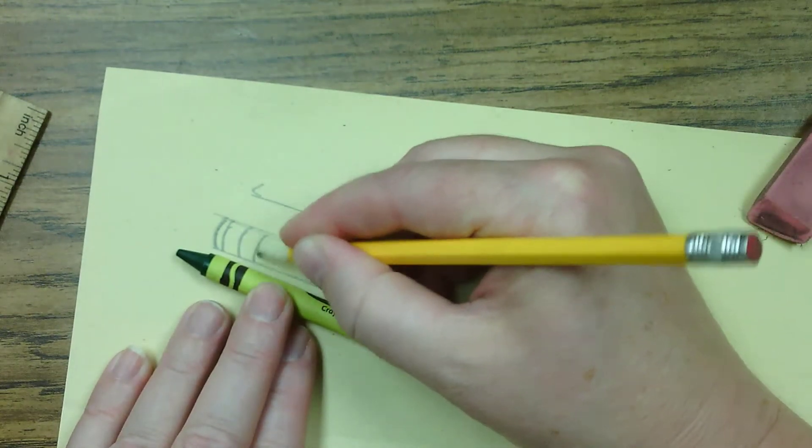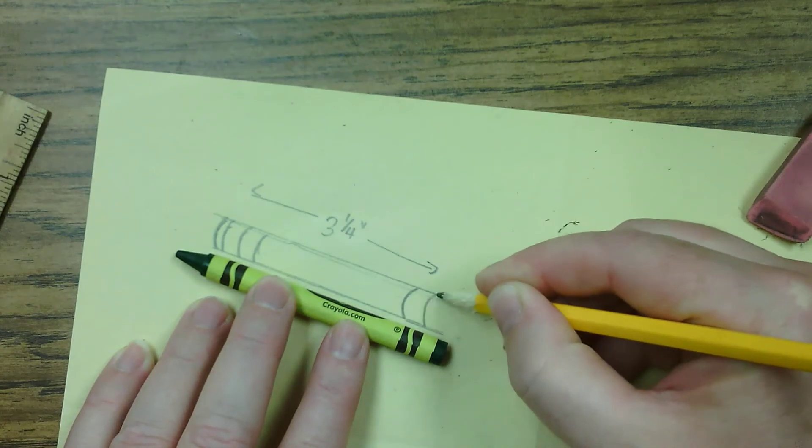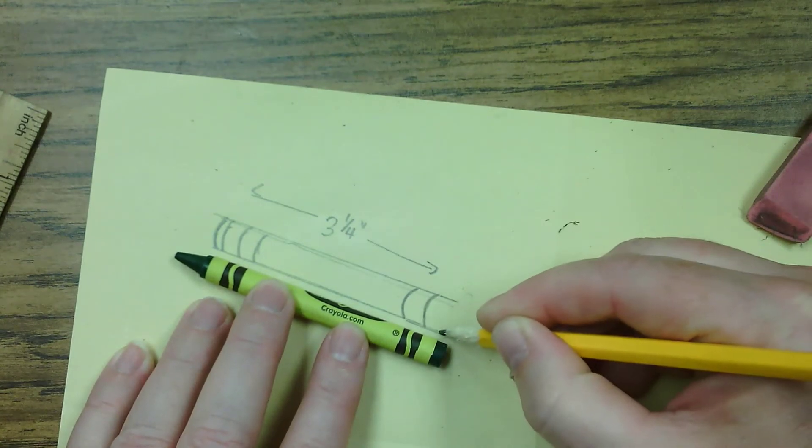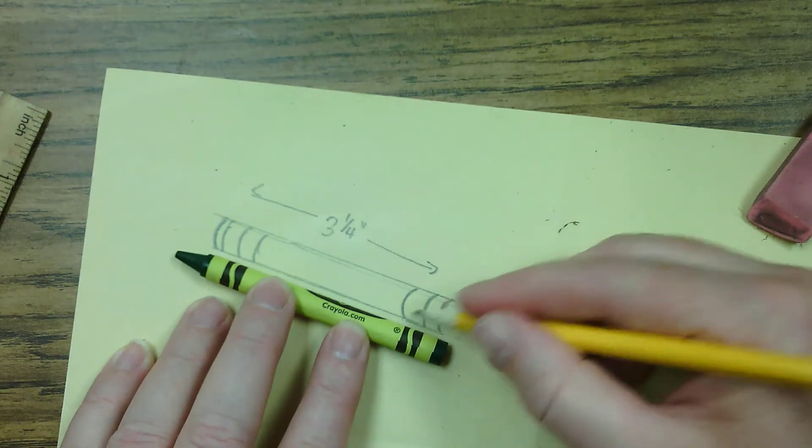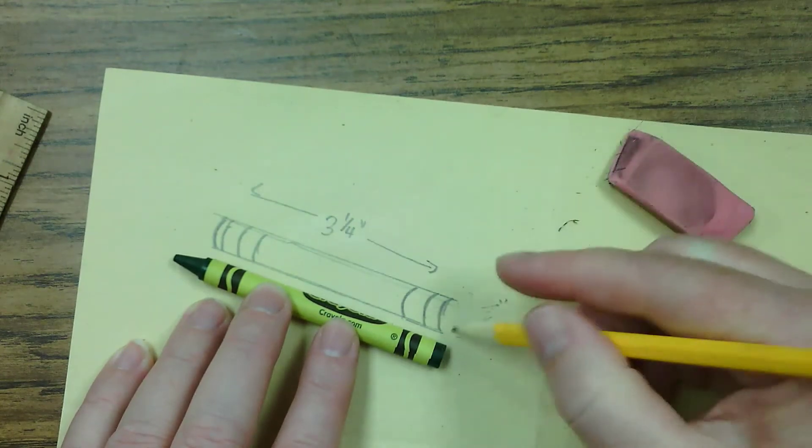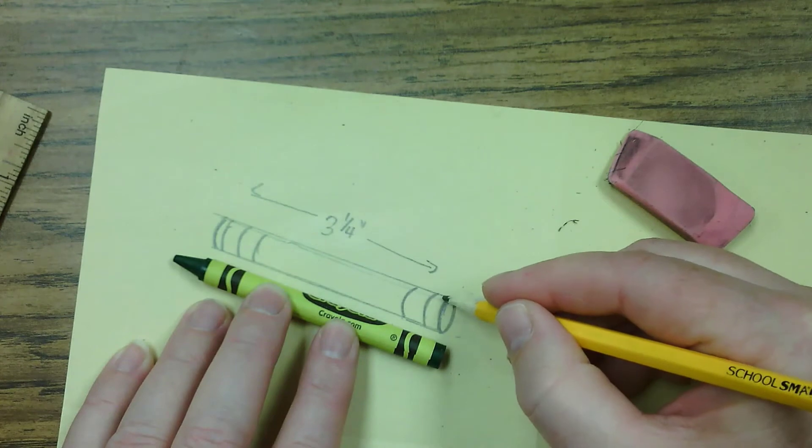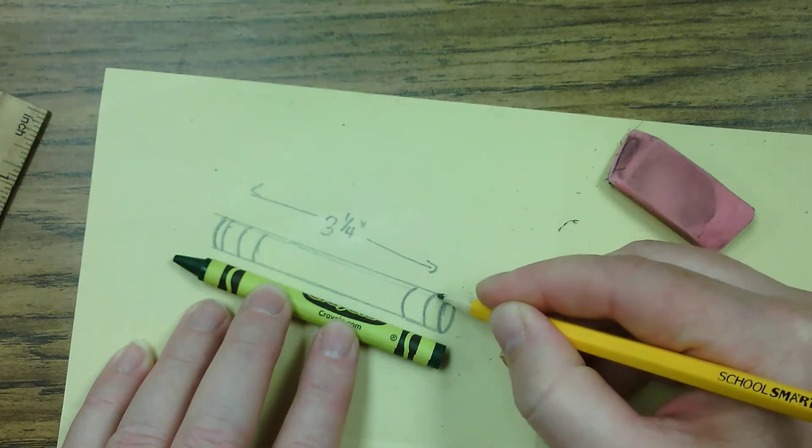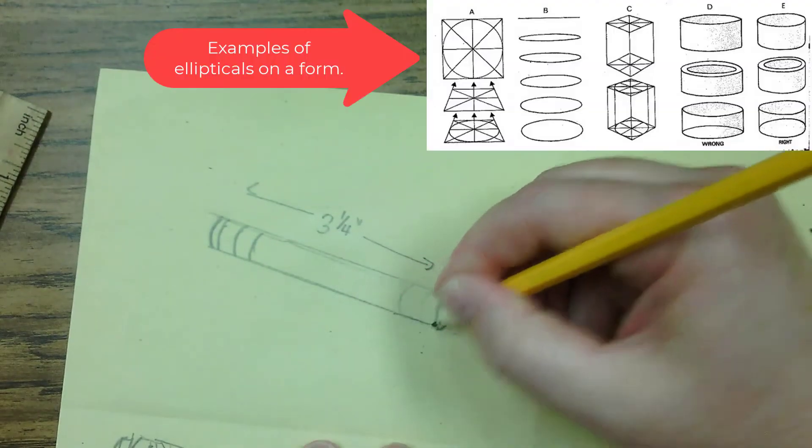Now I'm placing the crayon next to my drawing so I know where the designs are supposed to be placed. Each line that's straight, that appears straight, will be drawn curved to give the illusion of a curved form. If you take a string or line and you wrap it around a curved form, that line will become curved as well. So that's why we are drawing all of our lines curved.